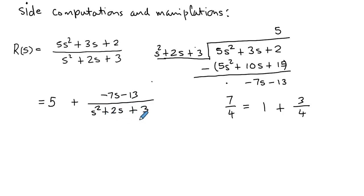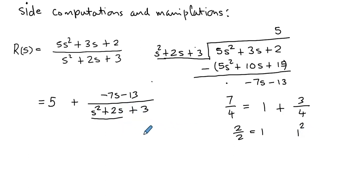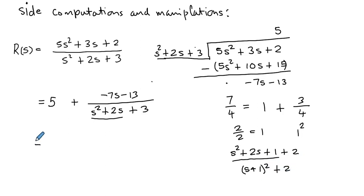We borrow a 1 from the constant 3 to write the denominator as (s + 1)² + 2, i.e., (s + 1)² + (√2)². We then update R(s) to: 5 + (−7s + 13) all over (s + 1)² + (√2)². We can see we are approaching a situation similar to Laplace transforms of sine and cosine, with omega equal to √2.